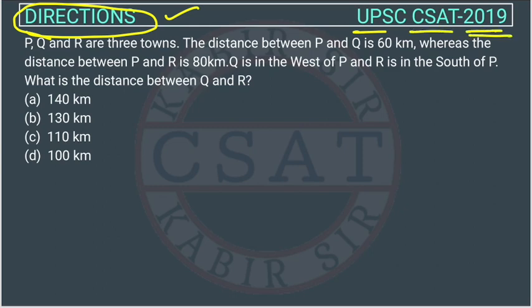P, Q and R are three towns. The distance between P and Q is 60 kilometers, whereas the distance between P and R is 80 kilometers.